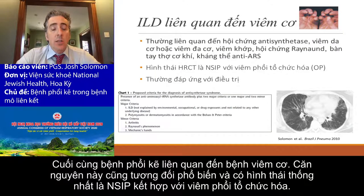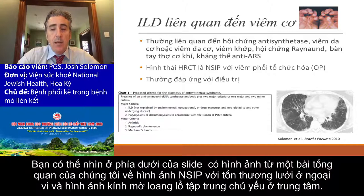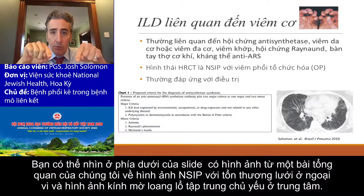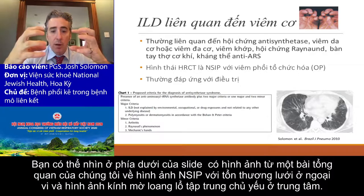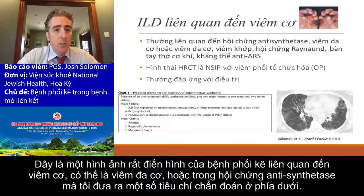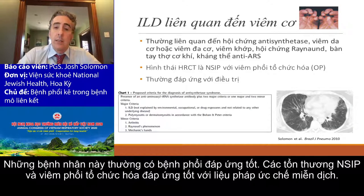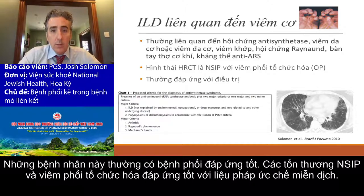Finally, myositis associated interstitial lung disease is also relatively common and has a very unique pattern of NSIP with organizing pneumonia. There's a picture from a review showing this patient with NSIP — peripheral reticulation and ground glass, and patchy ground glass throughout that's more centrally located. That's a very typical look for myositis associated ILD, which can be with polymyositis or in the form of the antisynthetase syndrome. These patients usually have a very responsive lung disease — this NSIP and organizing pneumonia will often respond well to immune suppression.